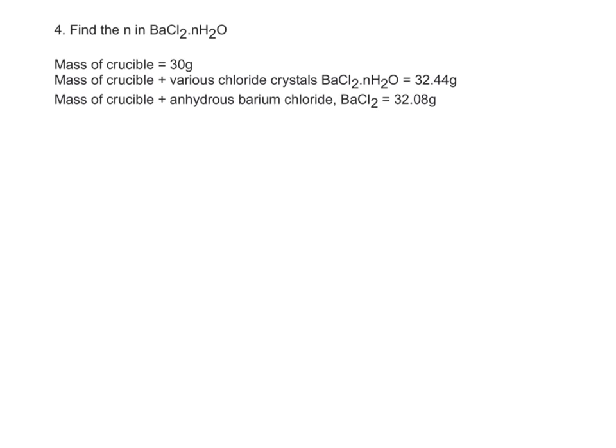We have the mass of crucible is 30 grams. We've got the mass of the crucible plus various chloride crystals is 32.44 grams, and the mass of crucible with anhydrous barium chloride is 32.08 grams. The crucible is just a little ceramic pot that you heat stuff up in, so you need to take that away from your values, because obviously that's not reacting. And like I said before, anhydrous means without water.